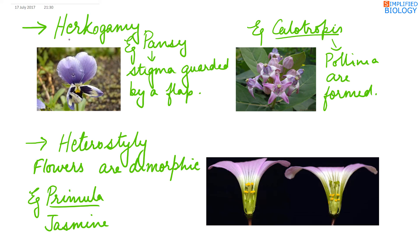Next is herkogamy. Herkogamy means some barrier is present which prevents self-pollination. For example, in pansy, the stigma is guarded by a flap which can be broken by insects only. So cross-pollination will only occur when insects come to the flap.